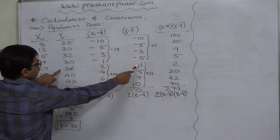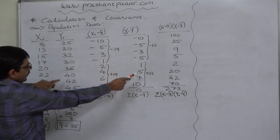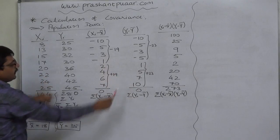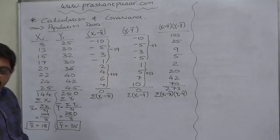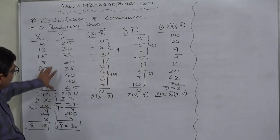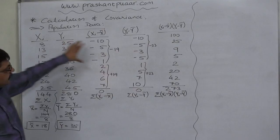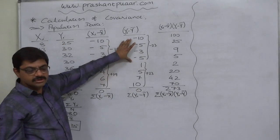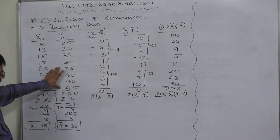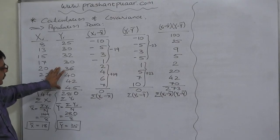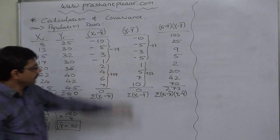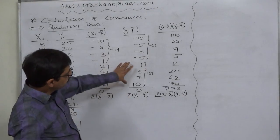36 minus 35 positive 1, 40 minus 35, 5, 42 minus 35, 7 and 45 minus 35, 10. Again, we can observe that when the variable takes values less than mean, we have negative deviations and similarly, when the variable takes values greater than mean, there are positive deviations.